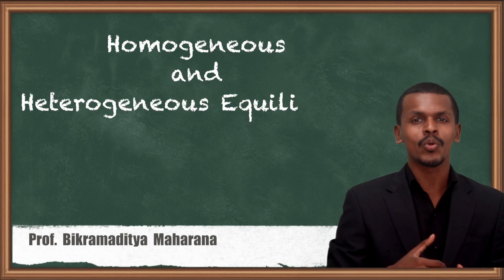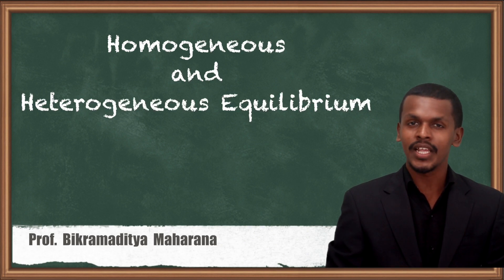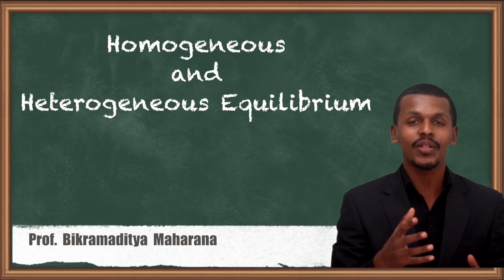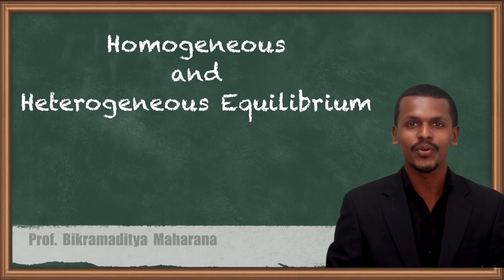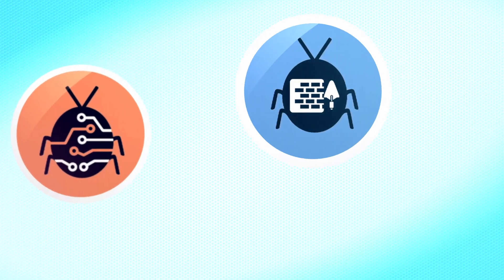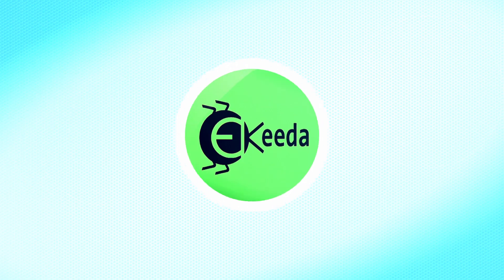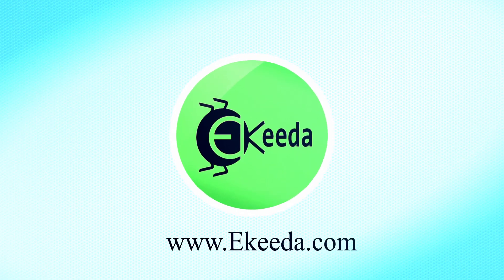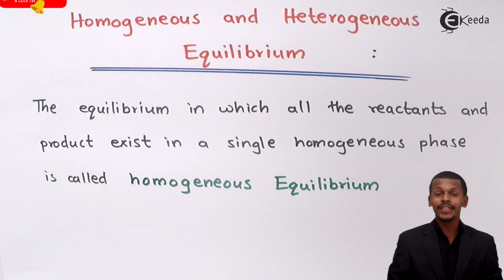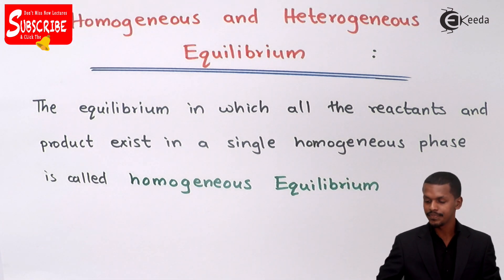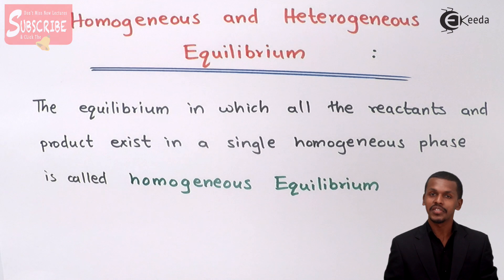Hello friends. In the previous lecture we got to know what chemical equilibrium is, and now we are going to discuss chemical equilibrium of two different phases. The two types of chemical equilibrium reactions are categorized into homogeneous and heterogeneous equilibrium.